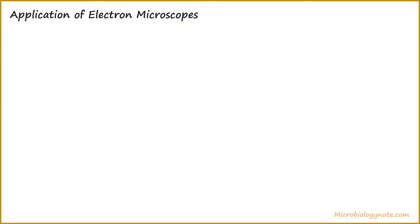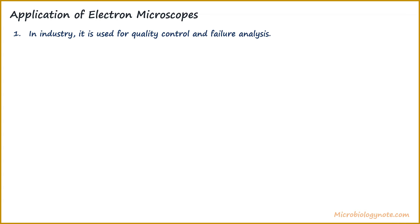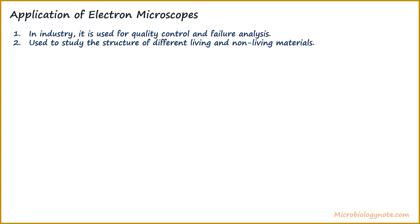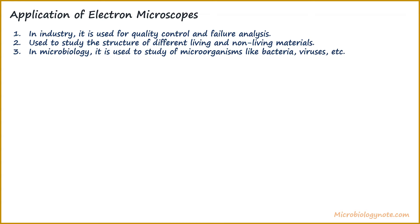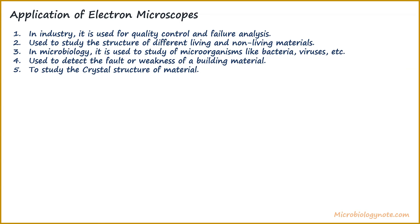Electron microscopes have different applications. In industry, they are used for quality control and failure analysis. They are used to study the structure of different living and non-living materials. In microbiology, they are used to study microorganisms like bacteria, viruses, etc. They are also used to detect faults or weaknesses in building materials, to study the crystal structure of materials, and to study the adsorption of particles on surfaces.